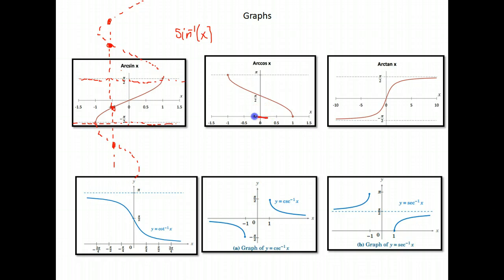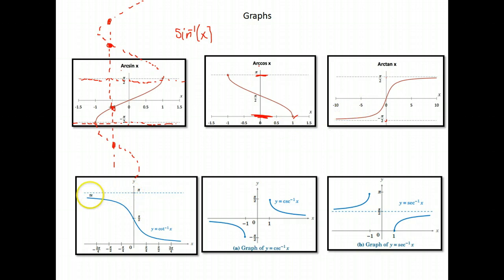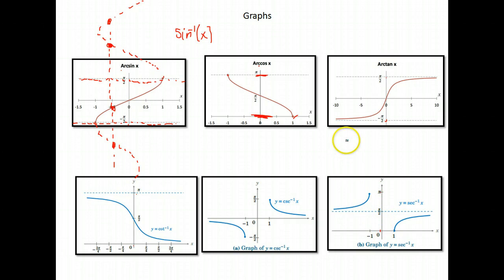For cosine, when they cut it off to make sure it was a function, it's from 0 to π. Arc tangent, or inverse tangent, is from negative π/2 to π/2. Notice these two include their endpoints, but tangent does not, because tangent has asymptotes there. Cotangent is from 0 to π. Cosecant, like sine and tangent, goes from negative π/2 to π/2, excluding 0, because there's an asymptote there. And then secant, like cotangent and cosine, goes from 0 to π.